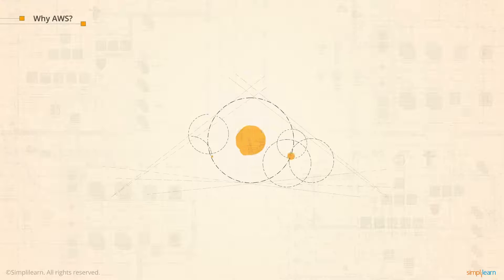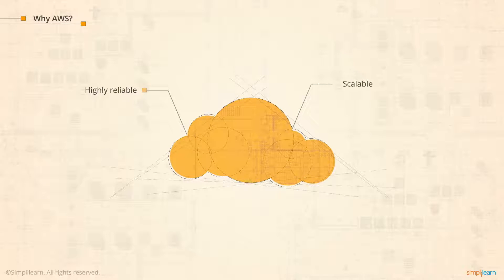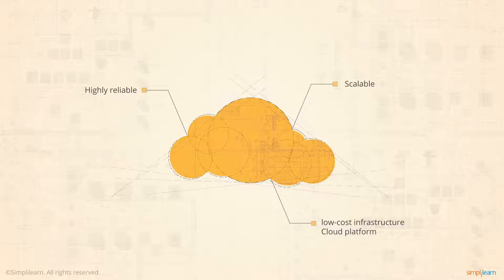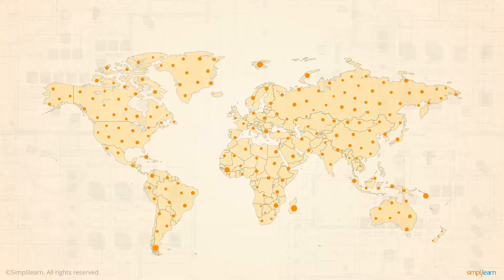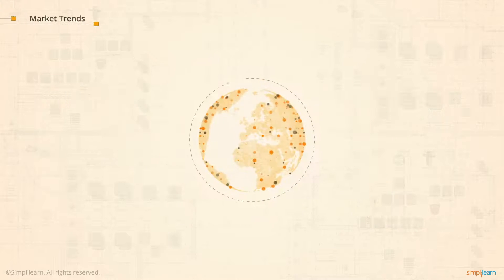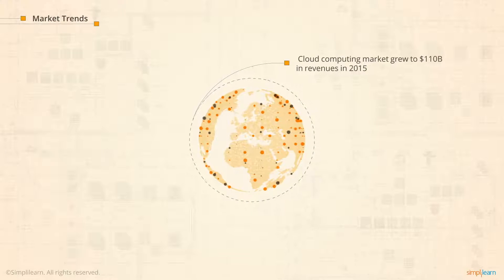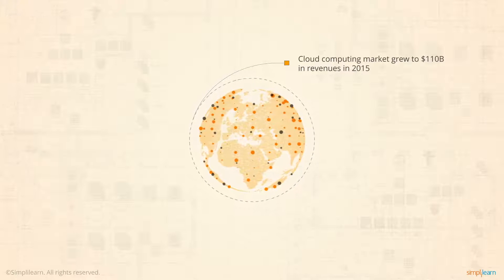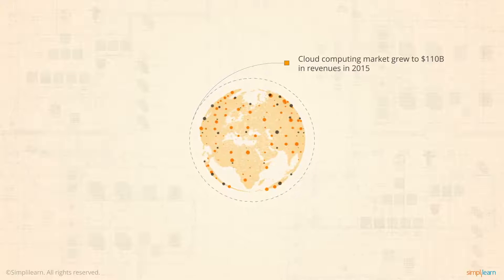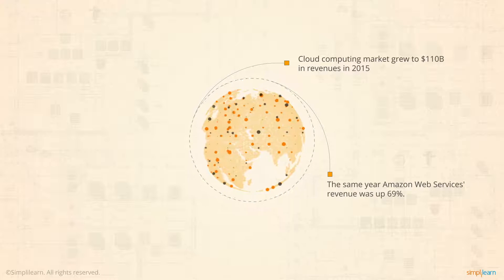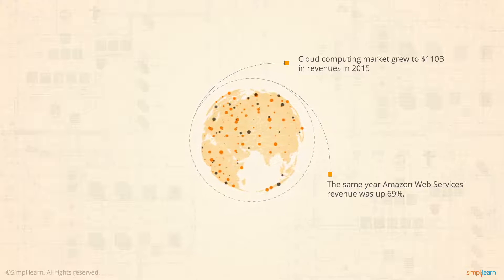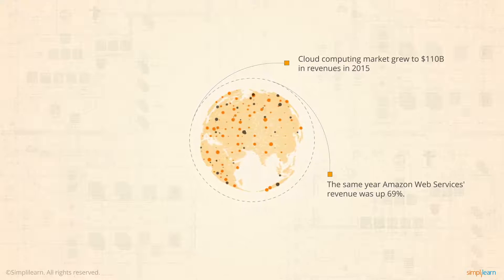Amazon Web Services provides a highly reliable, scalable, low-cost infrastructure platform in the cloud that powers hundreds of thousands of businesses in 190 countries around the world. The worldwide cloud computing market grew 28% to $110 billion in revenues in 2015. In the last quarter of 2015, AWS revenue was up 69% year-on-year.